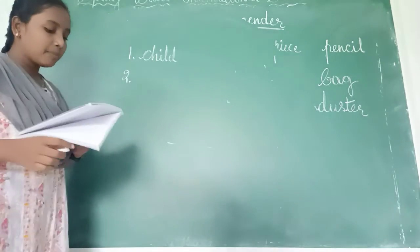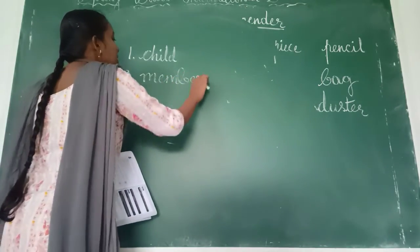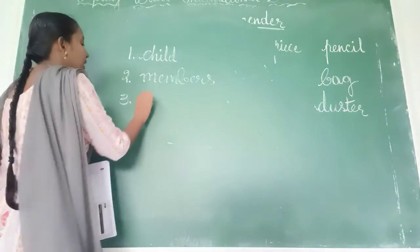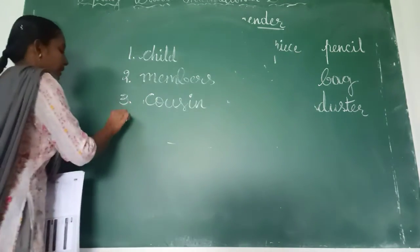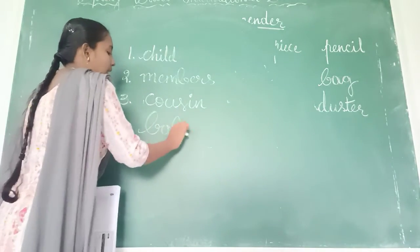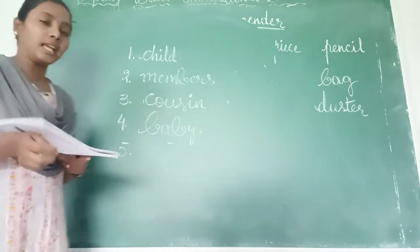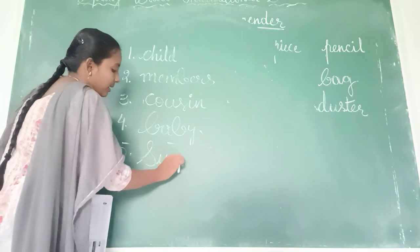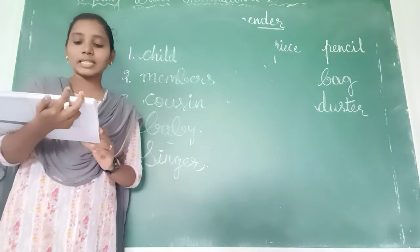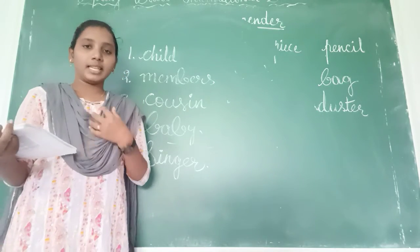Next sentence: 'The members of the cricket team gathered for a meeting.' Members can be boys or girls. Third: 'My cousin was angry with my brother' — cousin can be a sister or brother, so cousin is common gender. 'The baby is sleeping on the bed' — baby girl or baby boy, both called baby. 'The singer sang beautifully' — lady singer or gent singer, both called singer. Circle these five nouns. Common gender nouns are used to refer to living things only.